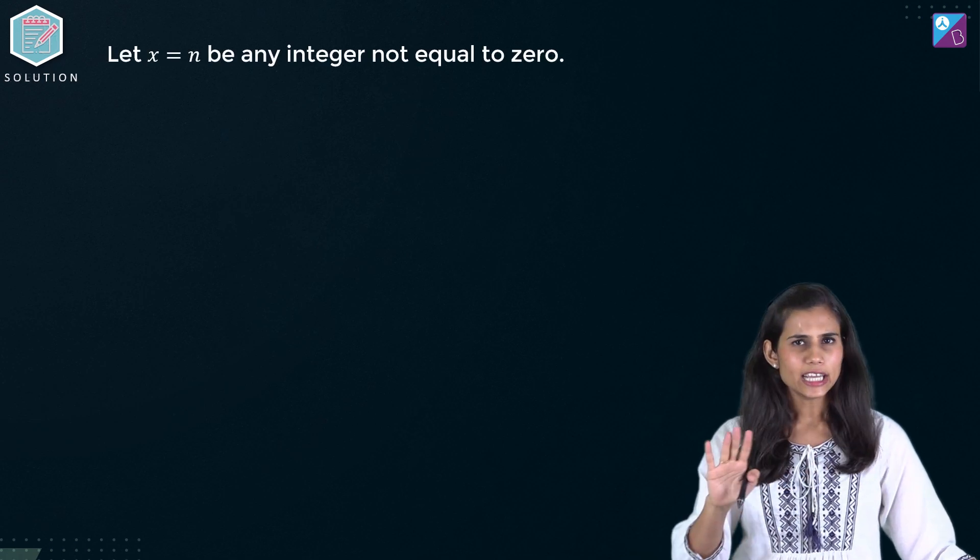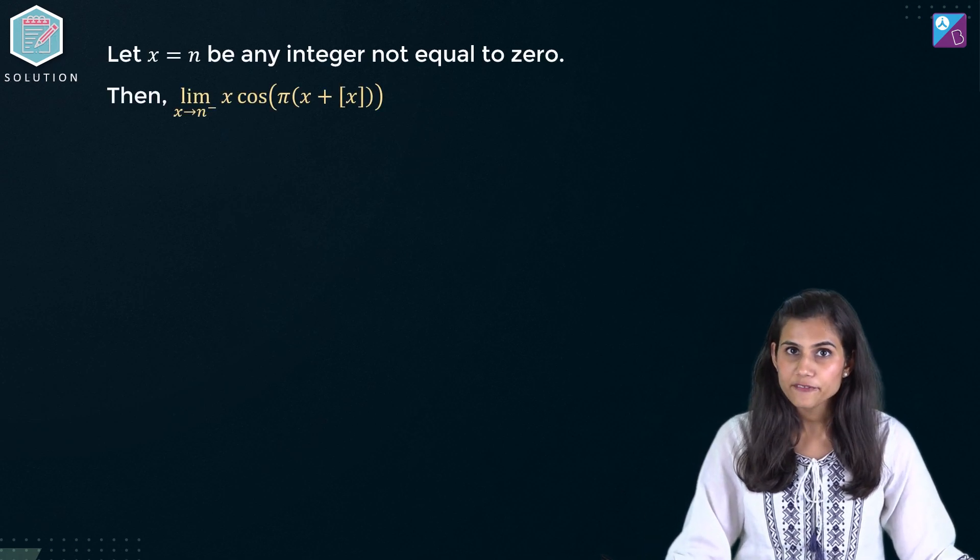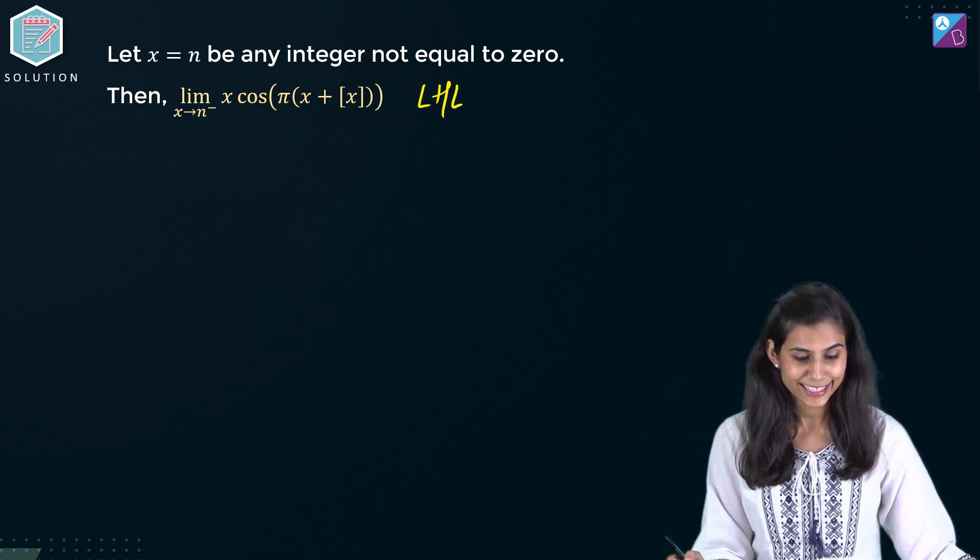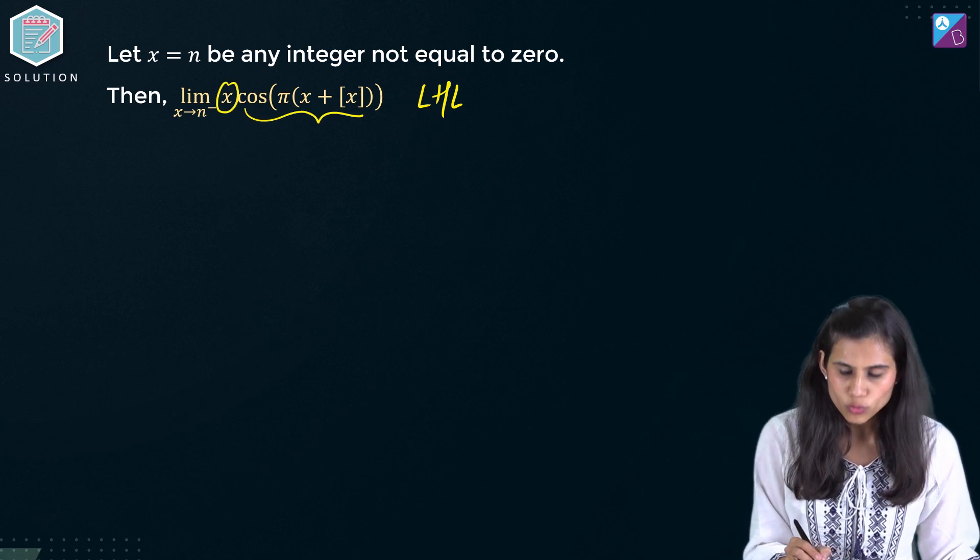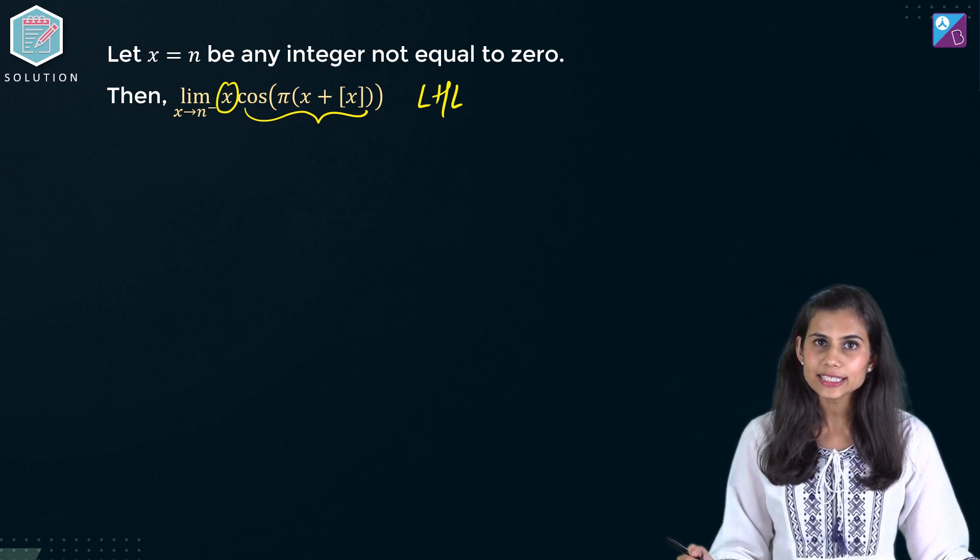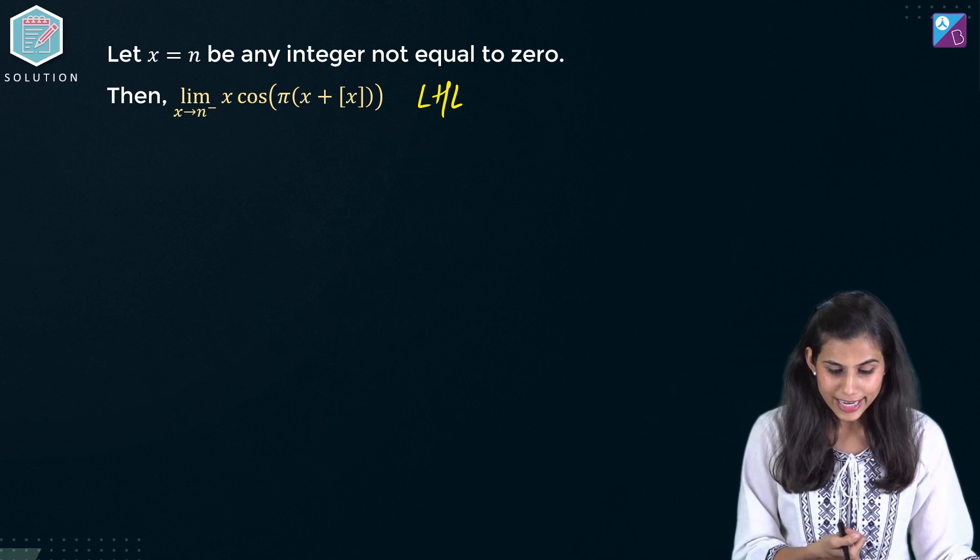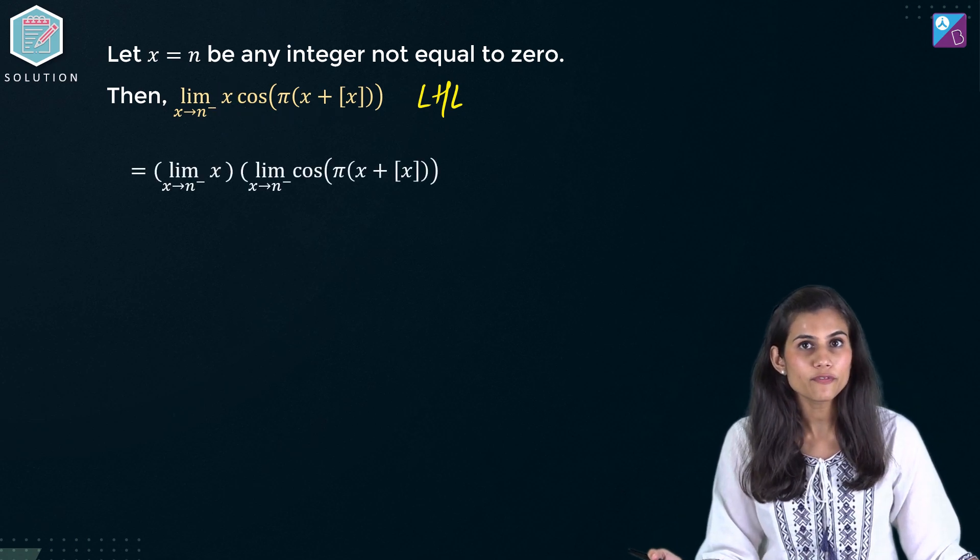Consider n to be any arbitrary integer. Then left hand limit of f at n will come out to be what? Let's see. The look of f is x multiplied with a cos expression. And we are aware of the fact that limit of product is product of individual limits. Right? So limit is going to get distributed to both these individual functions.